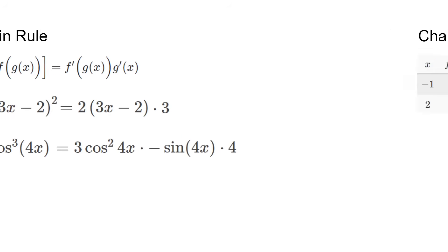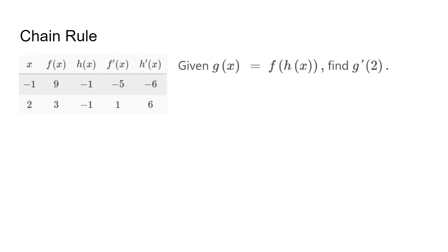We could also be given chain rule from a table, and we would follow a similar process but plug in numbers as we solve. We get h' from the table as 6, then get h which is negative 1. We take f' to get negative 5, and we get our answer as negative 30.